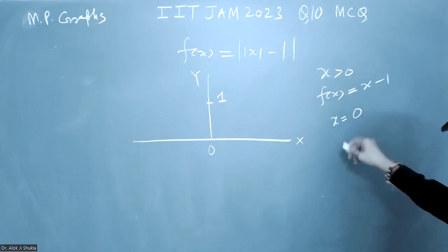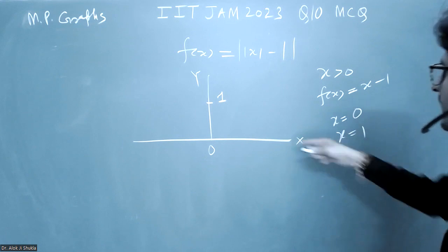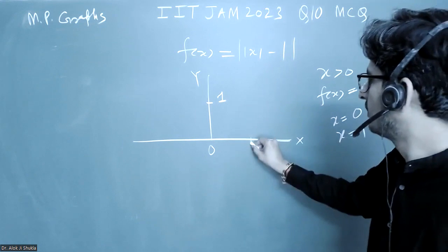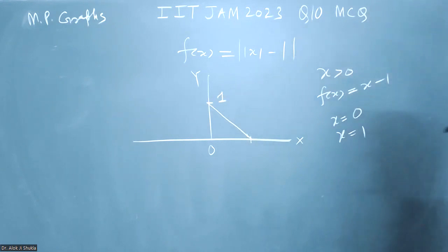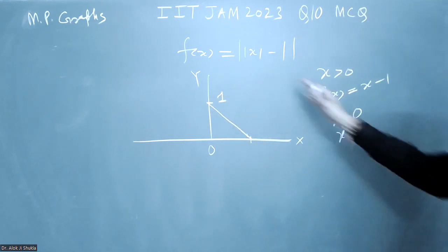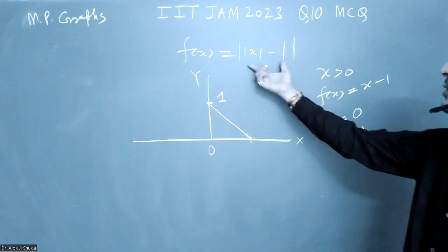And at x is equal to 1, what you are going to get is, at x equals 1 your function will become 0. So it will become like this. And for x greater than 1, this whole quantity will become positive.